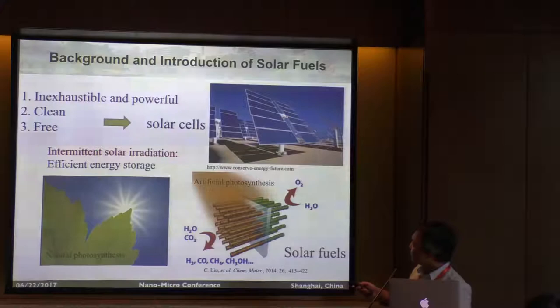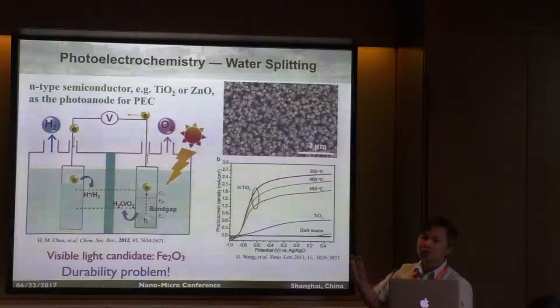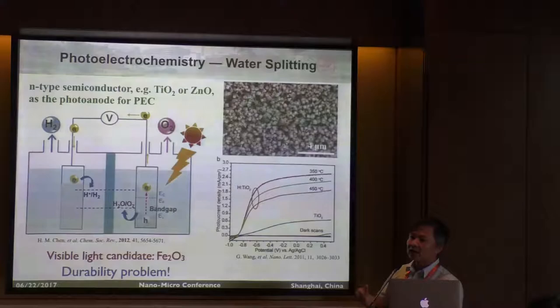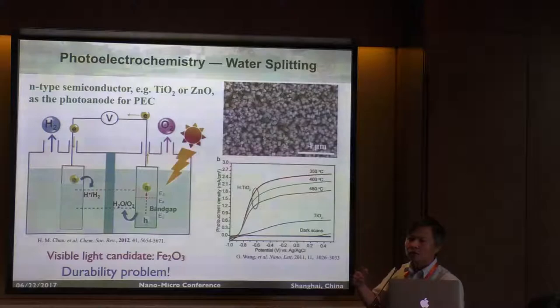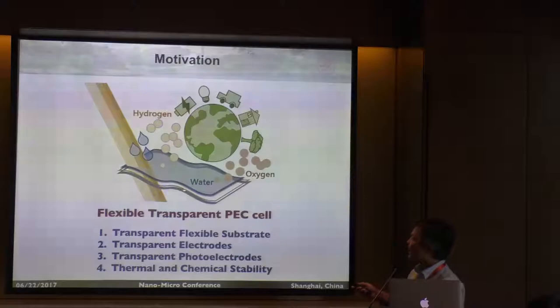I want to focus more on water splitting. For water splitting, a lot of people use TiO2 or zinc oxide, and basically they try to build up nail structures to increase the surface area. In this case, you can generate a large photocurrent, which means you can have more efficient photoelectrochemical cells. But in my study, we want to do something different — we want to make a photoelectrochemical cell that is flexible and transparent.